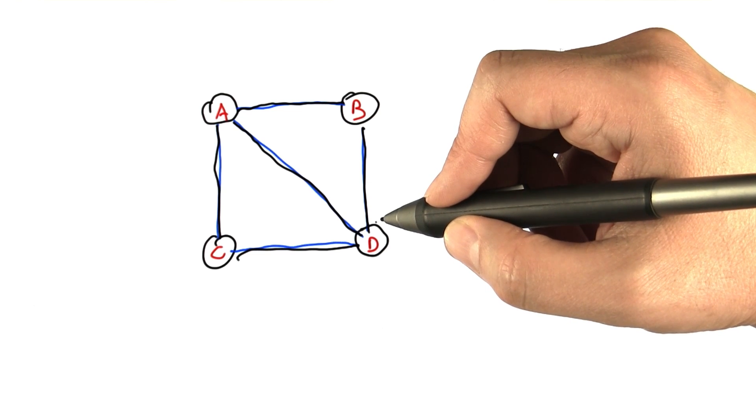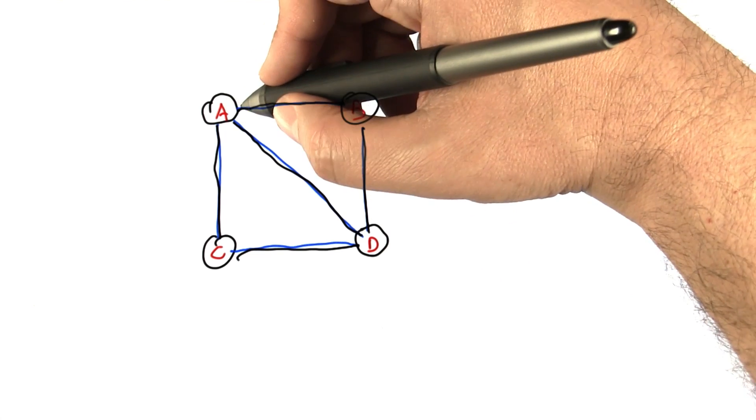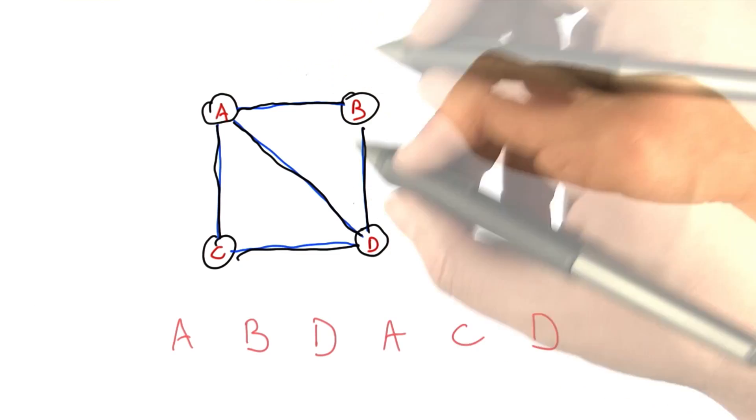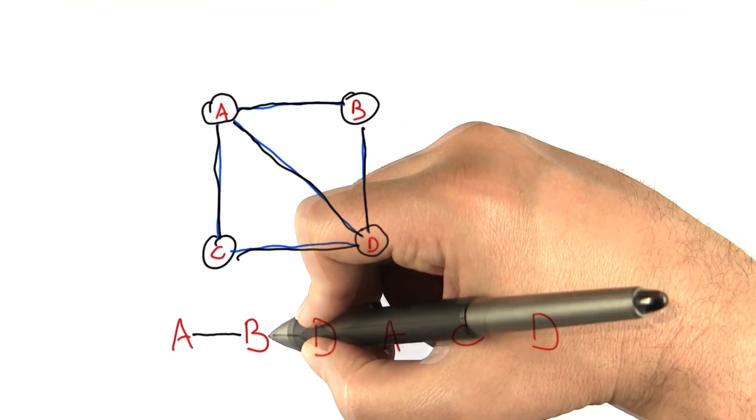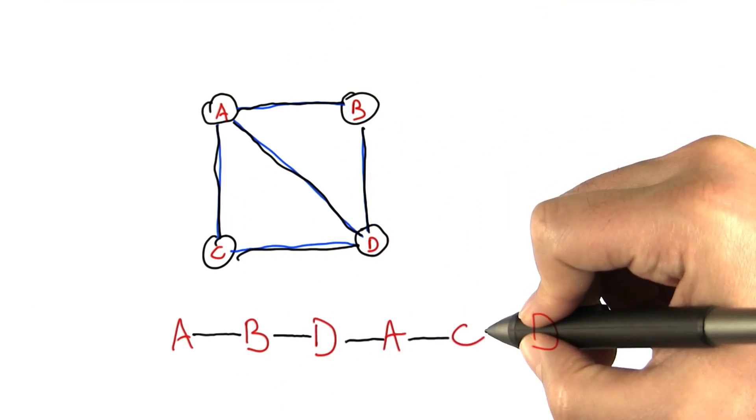Here's something that we can notice about a graph. If it has an Eulerian path, notice what has to happen to all the nodes along the path. So here's what we did in this example. We went from A to B to D to A to C to D.